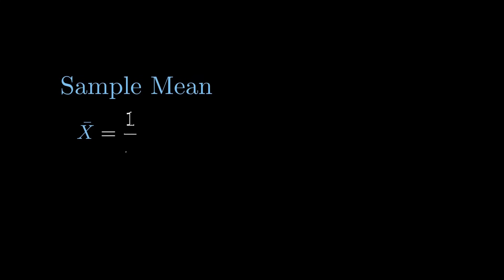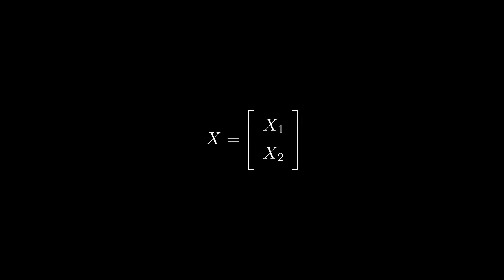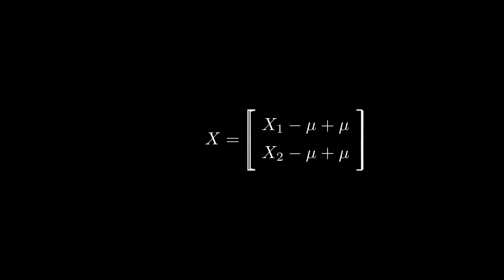One important thing to note is that we're talking about the mean of the observations — usually called the sample mean and labeled x-bar — and the degrees of freedom we just discussed do not apply for the mean of the distribution that the observations came from, usually called the expected value or population mean and labeled mu. That's a bit perplexing at first, because you might think: can't we just do the same decomposition, but with the population mean instead of the sample mean, and get the same answer? Well, let's try it. Starting with our random vector x, we can make the same move of adding and subtracting mu, then splitting the vector in two.